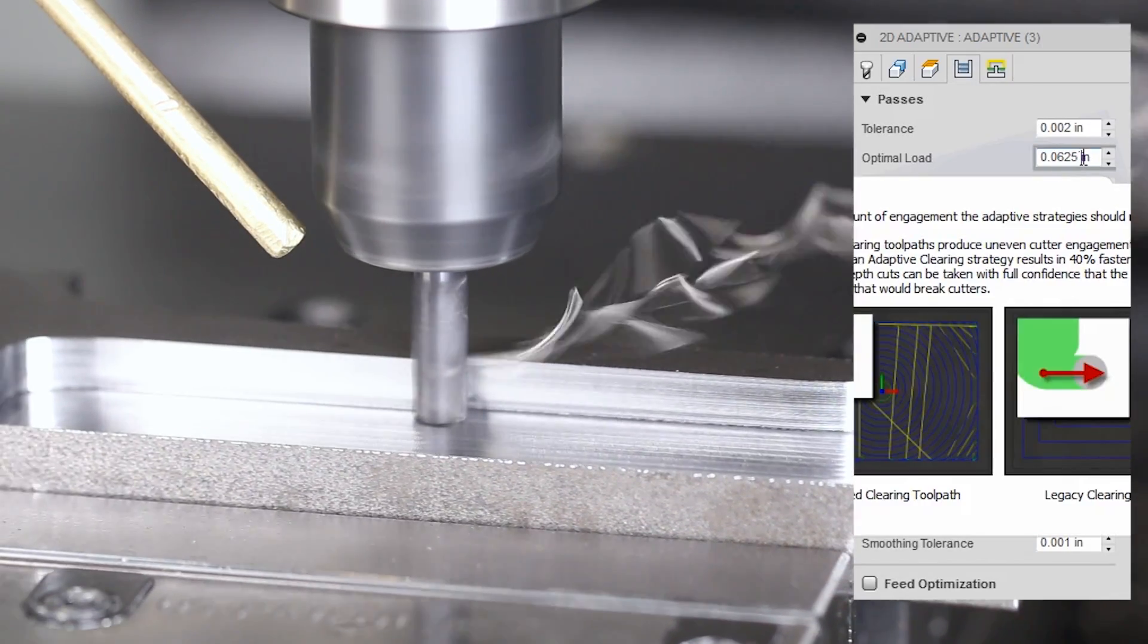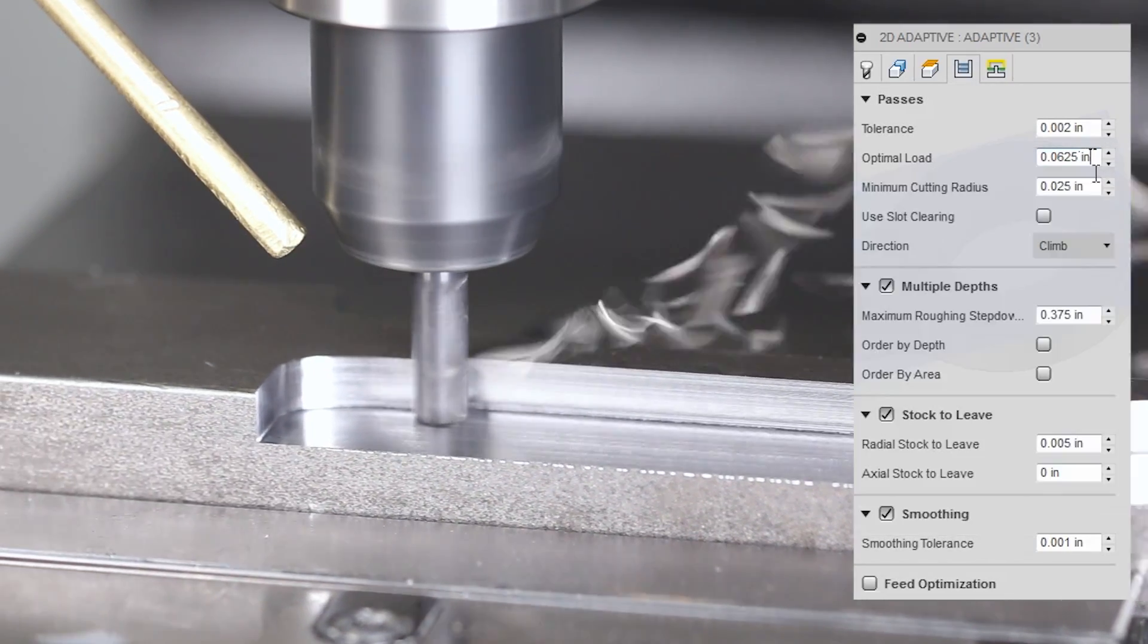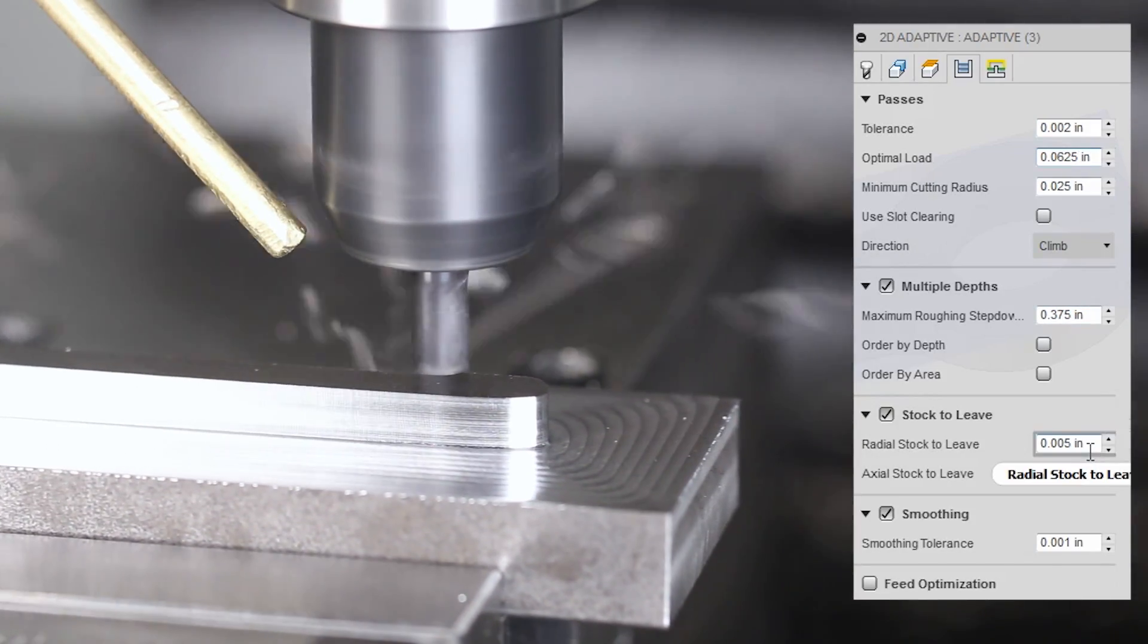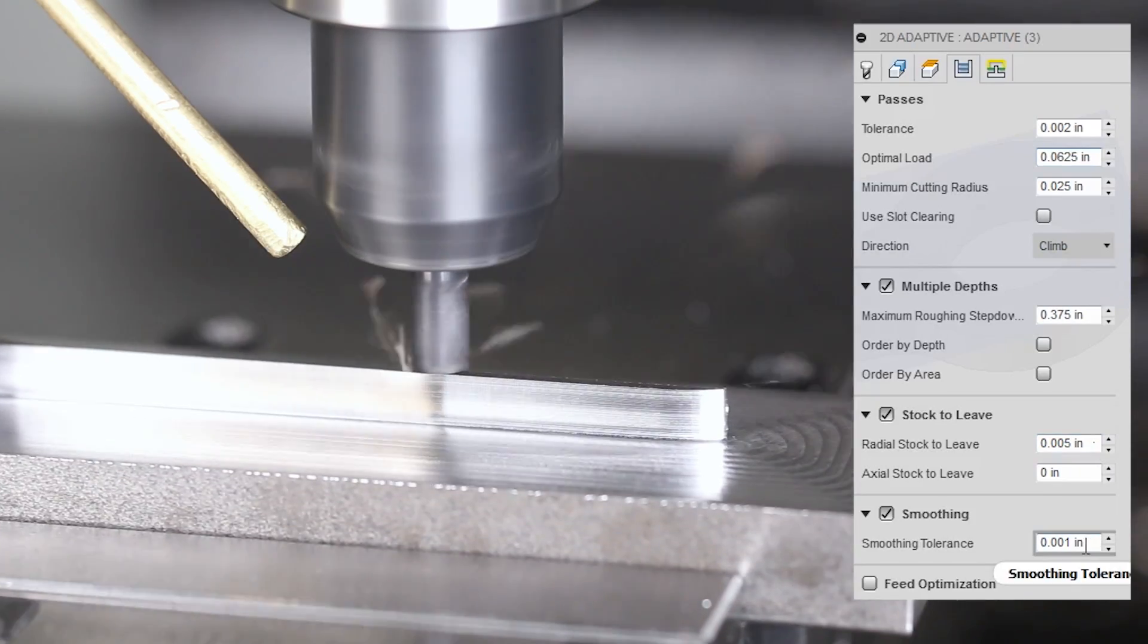0.06 optimal load, which is 25% of the tool, and we're doing it in 3/8 inch step-downs, leaving 5 thou radial to come back. I do have smoothing turned on.